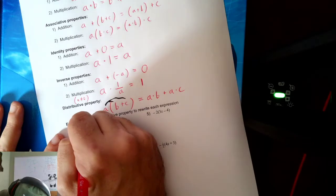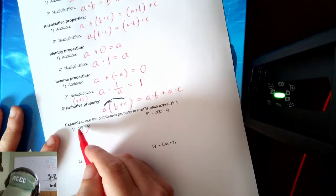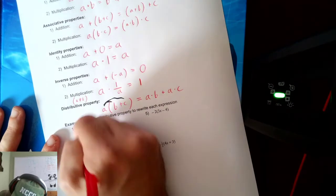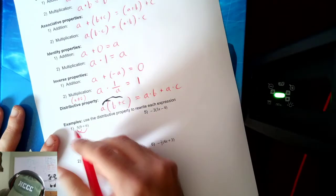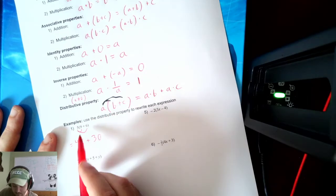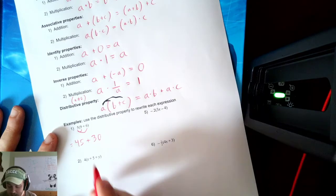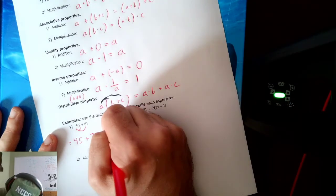So we'll distribute 5 to both 9 and 6. What is 5 times 9? Well, that's 45 plus 5 times 6, that's 30. Notice I rewrote the problem. Now I could add if I wanted to. 45 plus 30 is 75.